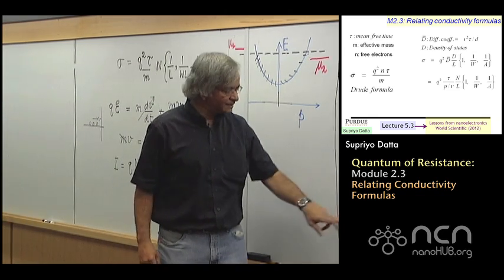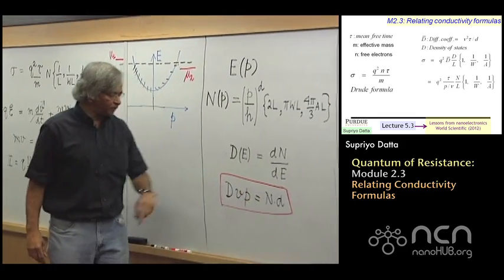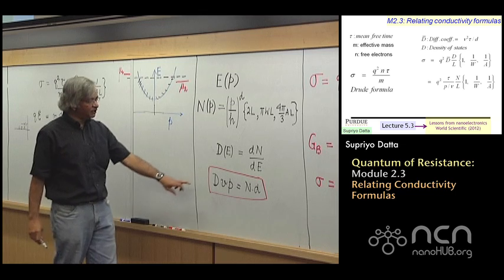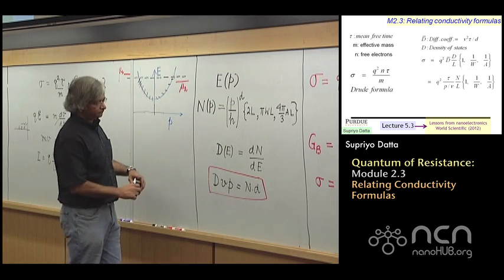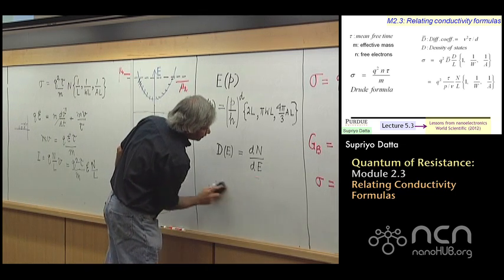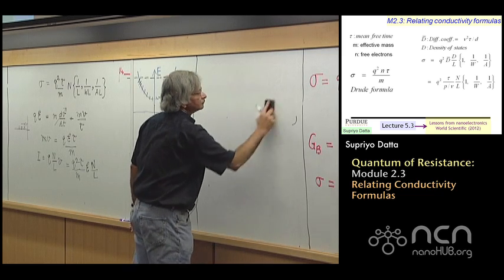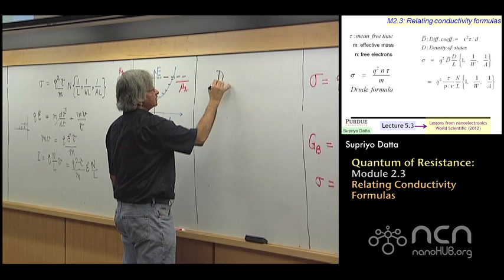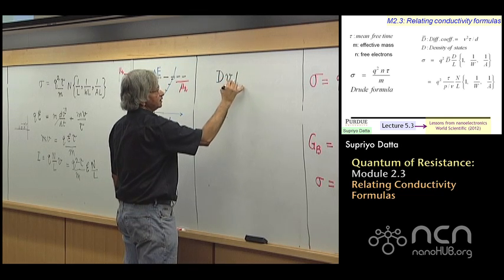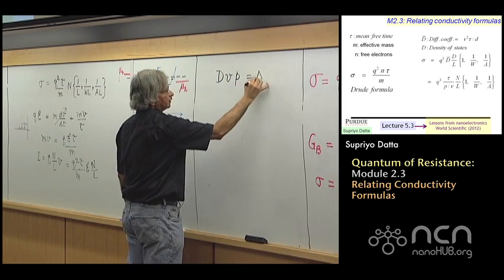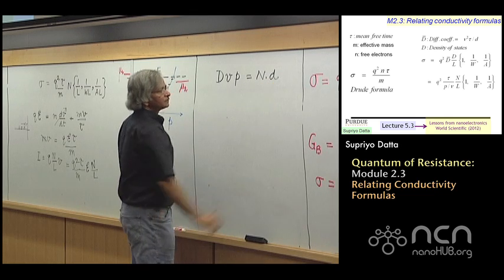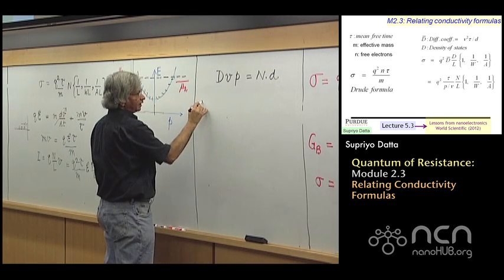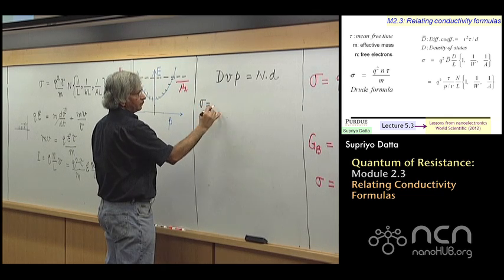And what we do here is, we make use of this relation that we obtained in module 2.1, this dvp equals nd. So let me write that up here. So the expression I want to make use of is that the density of states times vp is equal to n times d.